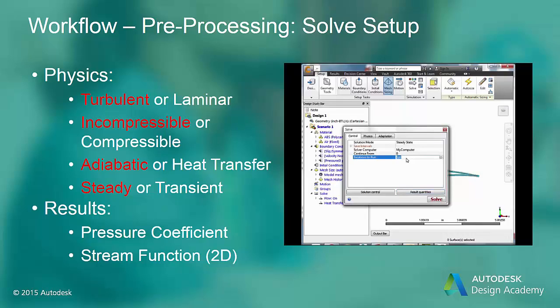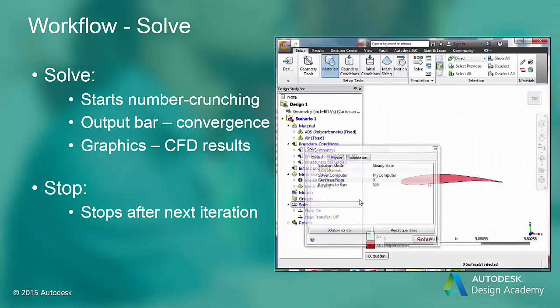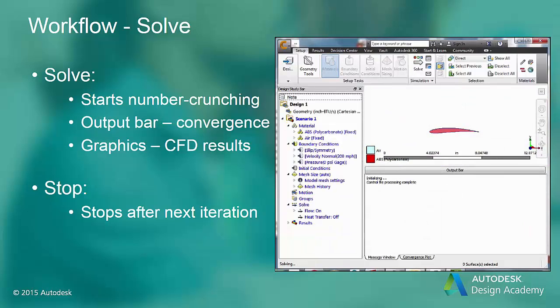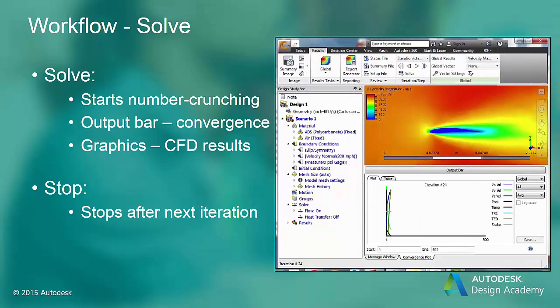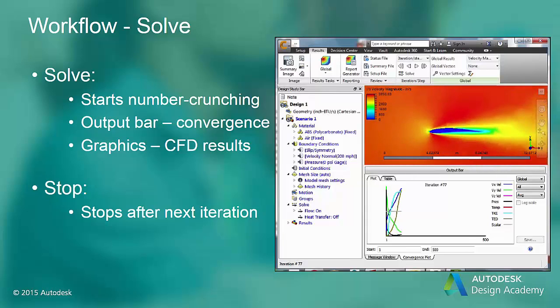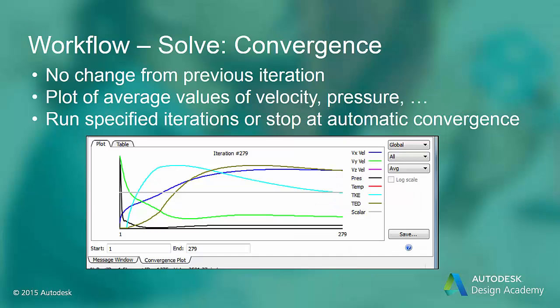Now we are ready to solve the solution. As Autodesk CFD solves the discrete equations, the current results are plotted in the top graphics window. You can change the result quantity you see here using the global result dropdown menu at the top right of the ribbon. Also plotted in the output window are the average values of the dependent variables as the solution progresses. We chose to run 500 iterations; however, the solution converged in 279 iterations.